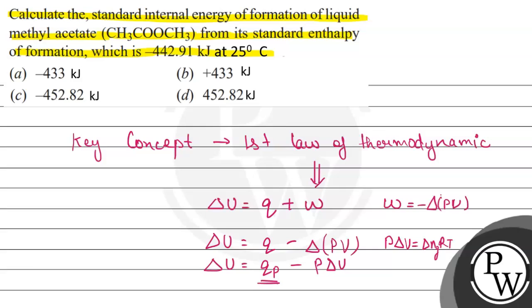Now QP is the heat at constant pressure and this equals the enthalpy. So here we can write it as delta H minus delta NgRT. This equation we have to use for this question. In standard form, delta U° = delta H° - delta NgRT.